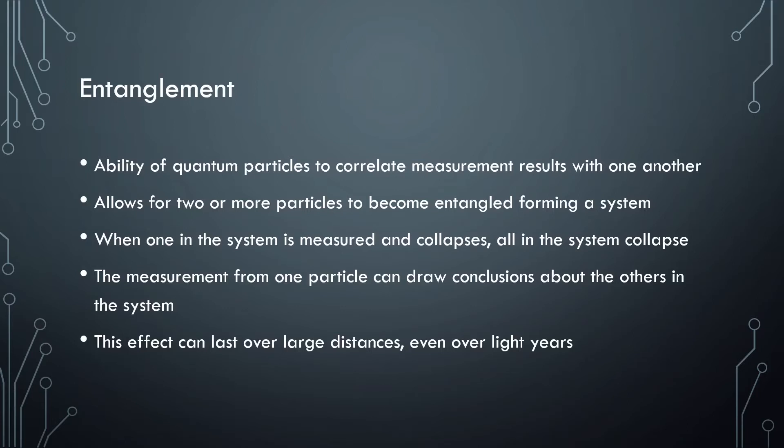One of the stranger properties is entanglement. Entanglement is the ability of quantum particles to correlate measurement results with one another. It allows for two or more particles to become entangled forming a system. When one particle in the system is measured and collapses, all particles in the system collapse. Therefore, a measurement from one particle can draw conclusions about the others in the system. Also, entanglement can last over very large distances, even over light years.